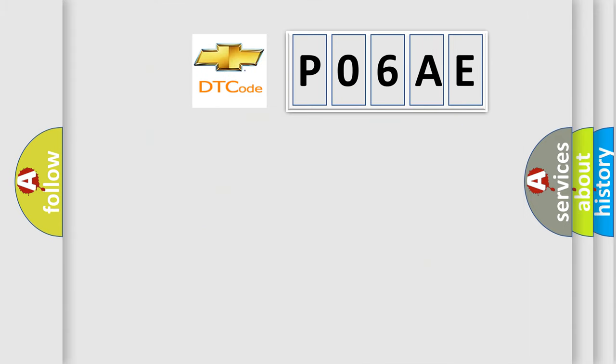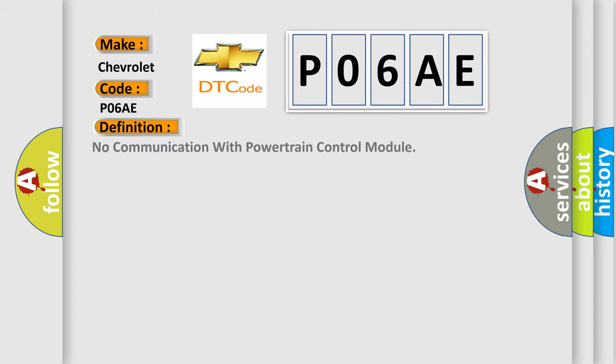So, what does the diagnostic trouble code P06AE interpret specifically for Chevrolet car manufacturers? The basic definition is: No communication with powertrain control module.